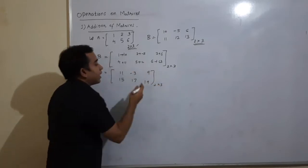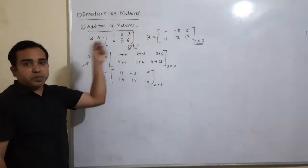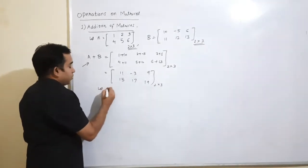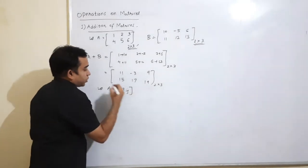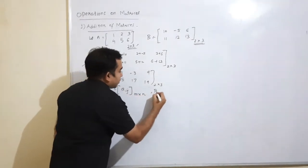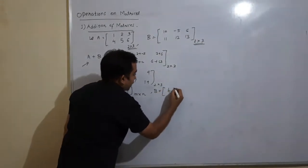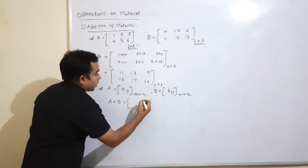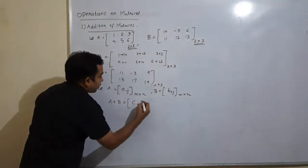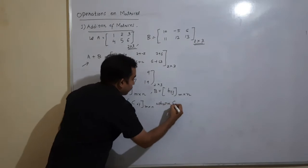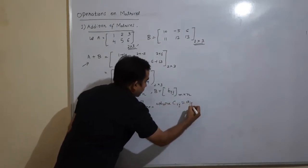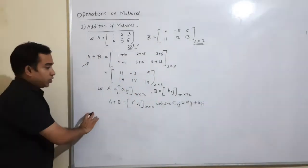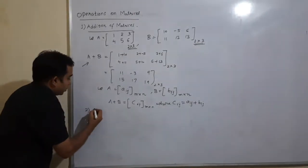So this is called matrix addition, and it has the same order as matrix A and matrix B. Addition means entry-wise addition. In symbols, if A = [a_ij] of order M×N and B = [b_ij] of order M×N, then A plus B is the matrix C = [c_ij] of order M×N, where c_ij is the sum of the respective elements a_ij and b_ij.